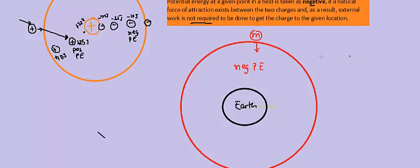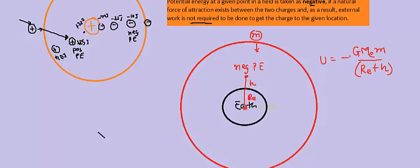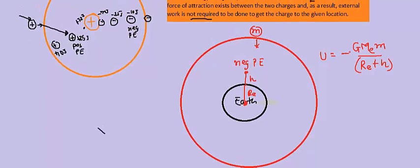That potential energy is given by U equals minus G M m divided by (R_E + H). There is always this negative sign, confirming that potential energy is always negative. Here G is the gravitational constant, M represents the mass of the earth, and small m is the mass of the object. R_E is the radius of the earth, and H is the height of the mass above the surface, so (R_E + H) is the distance from the center of the earth to the mass — since we assume the total mass of the earth is concentrated at its center.